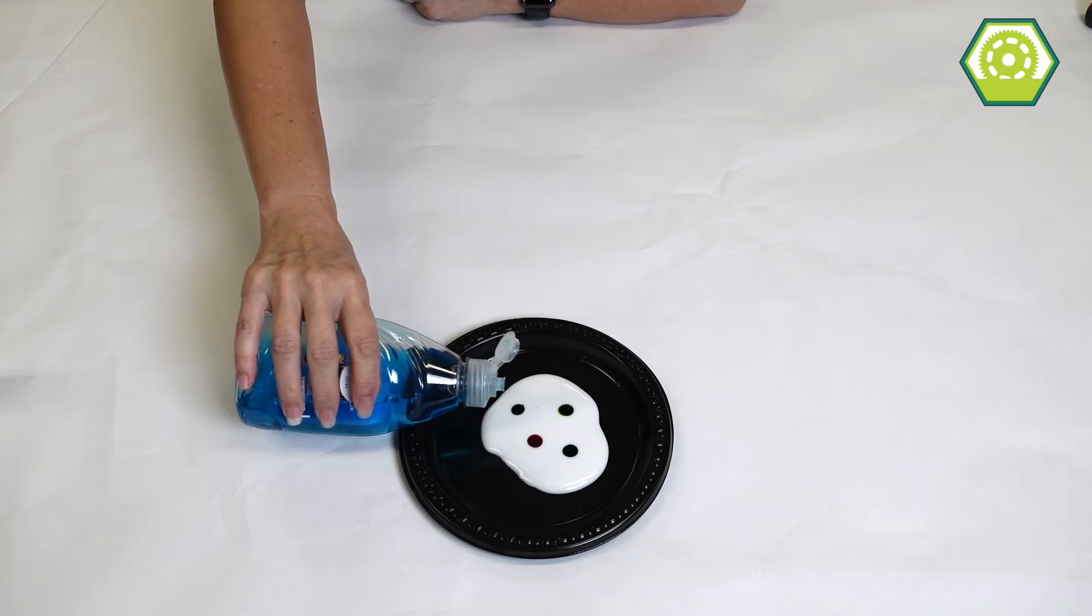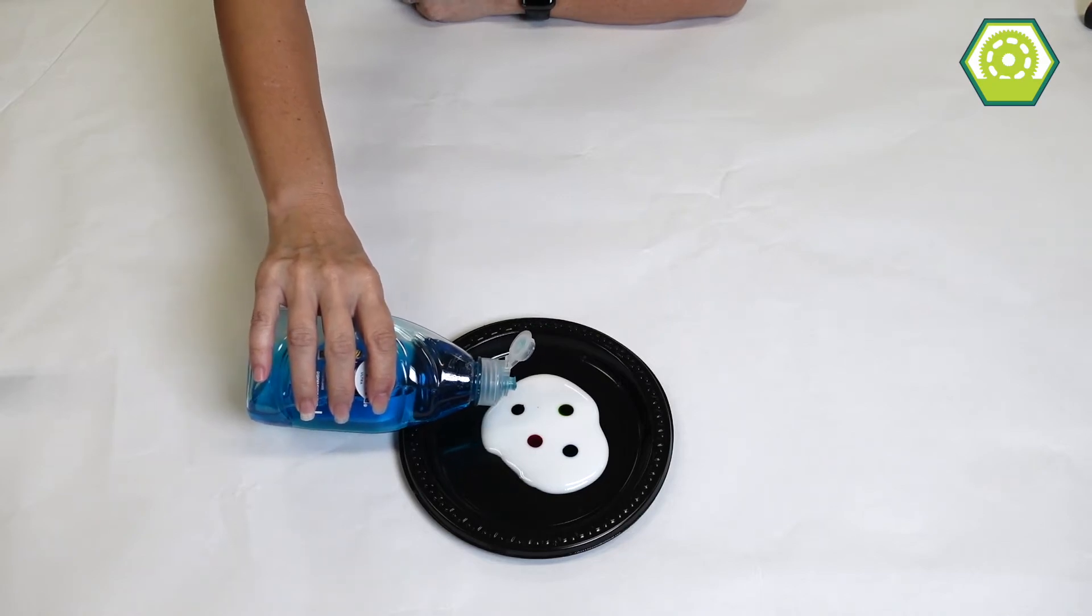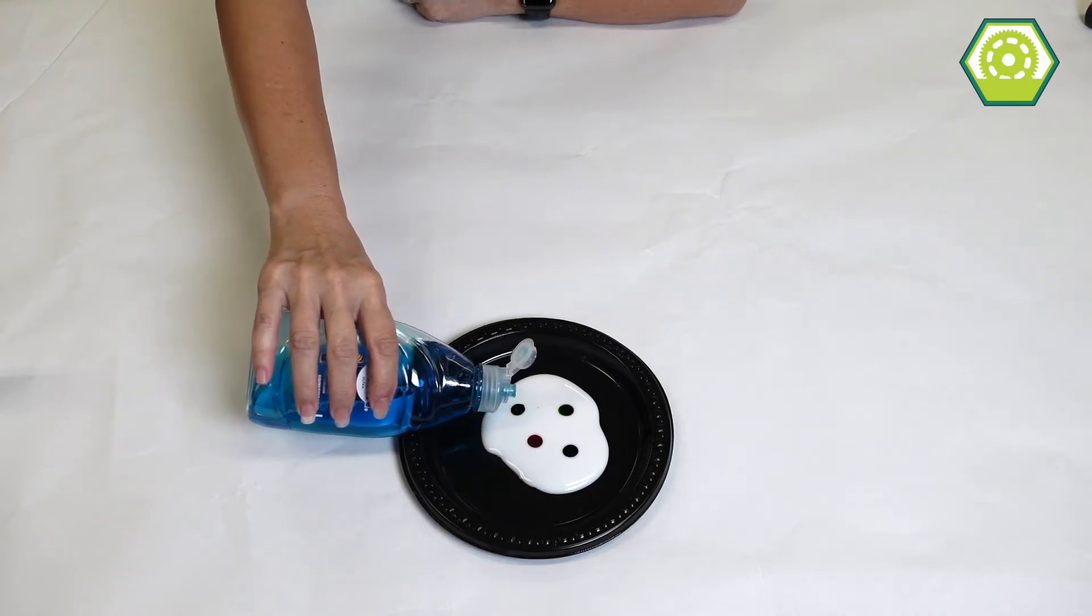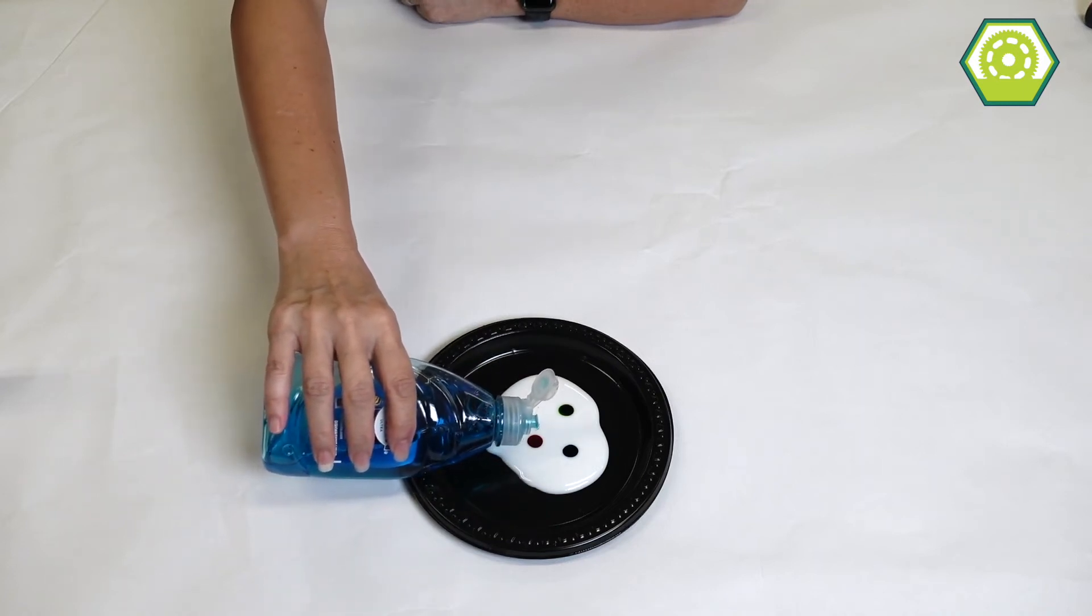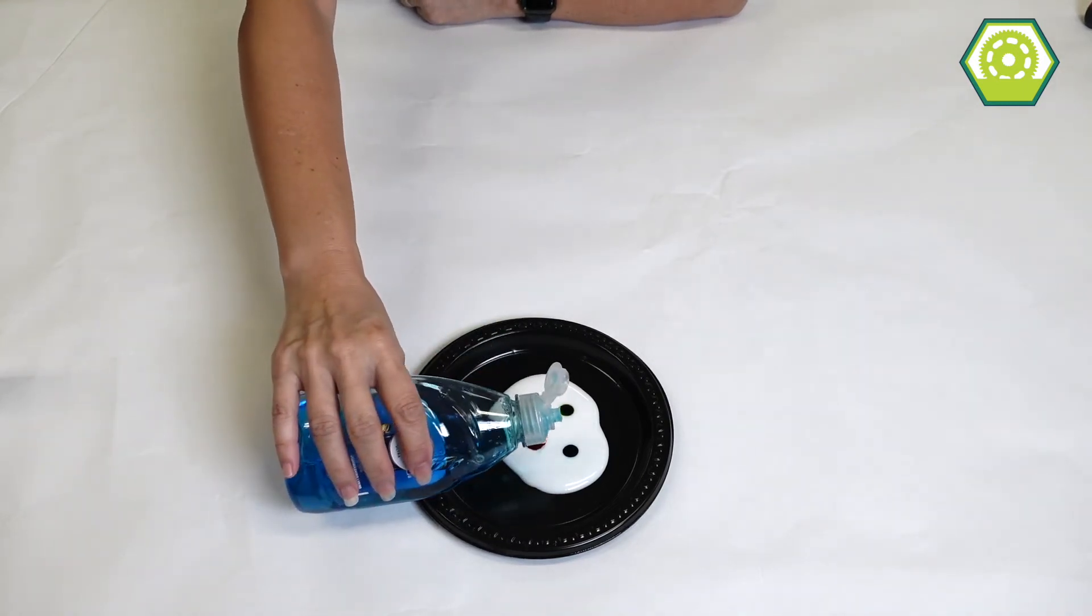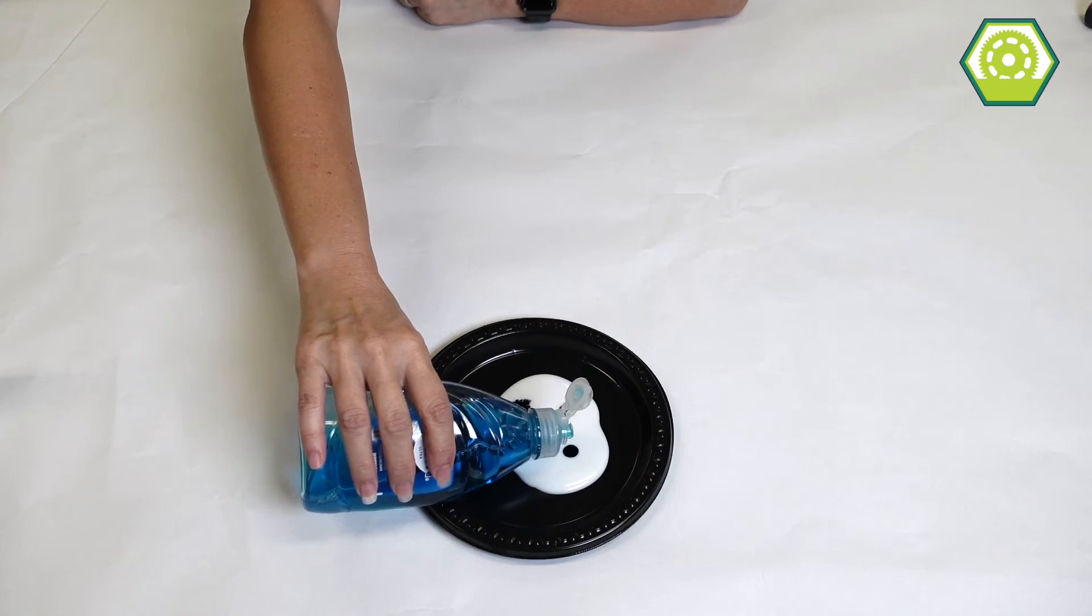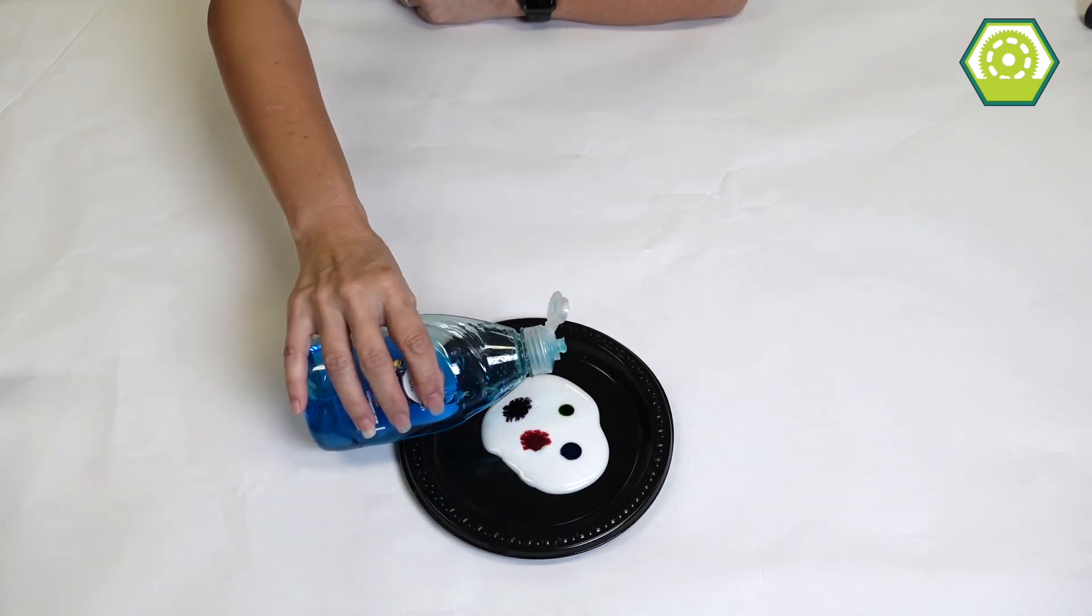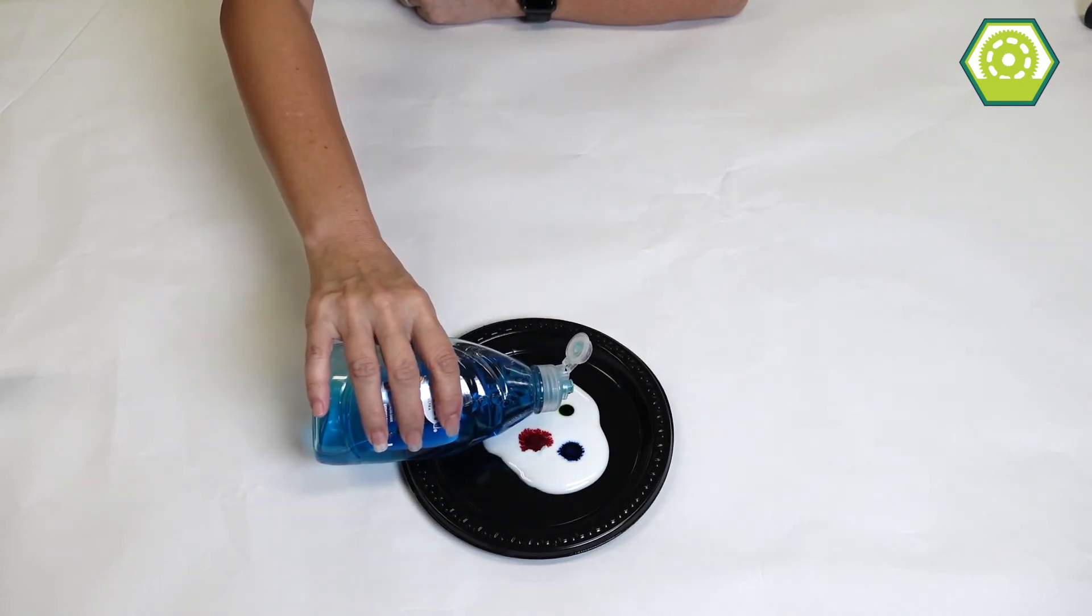So I'm just gonna squeeze a small drop of soap right onto the food coloring and you should be able to see some type of reaction. Oh that's a little bit too much. Wow do you see that?